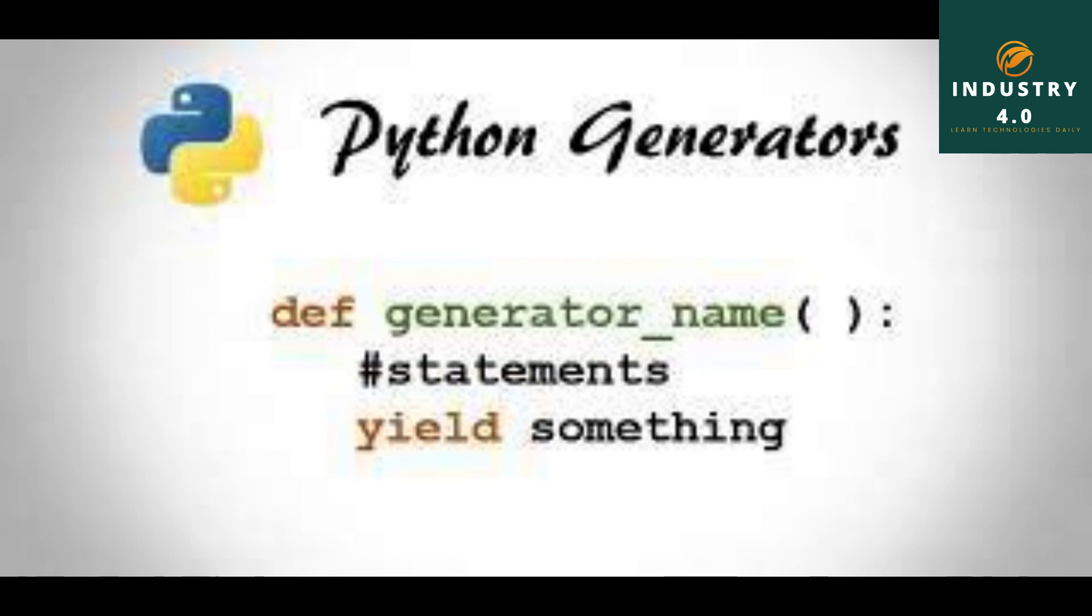Generators. Generators make available a suitable method to implement the iterator protocol. When a container object's __iter__ method is applied as a generator, it would automatically return an iterator object.